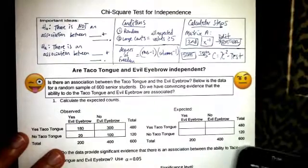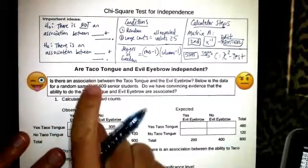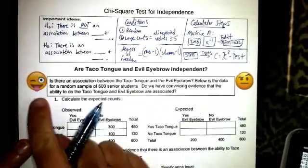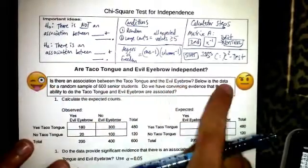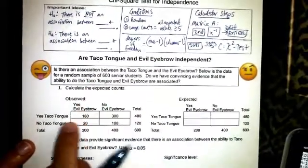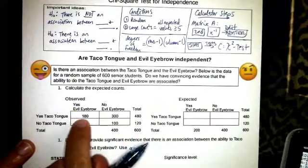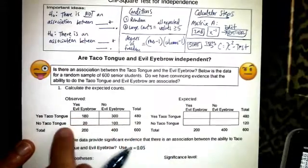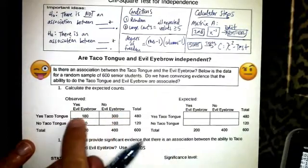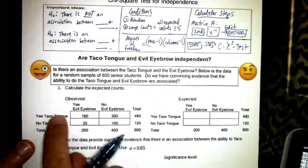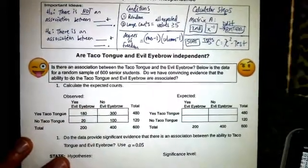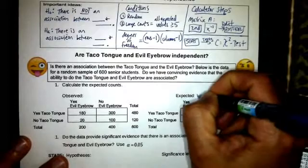Let's put all this together and determine if there's an association between being able to do the taco tongue emoji and the evil eyebrow emoji. Below is a random sample for 600 students. 180 can do both, 100 can do neither, 300 can do the taco tongue and not the evil eyebrow, and 20 can do the eyebrow but not the taco tongue.